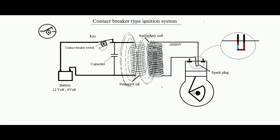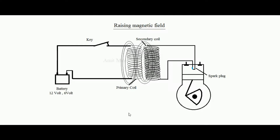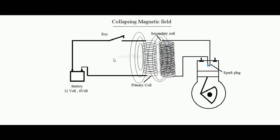The rotation of this contact breaker switch is synchronized with the rotation of the crankshaft, so that exactly on time the primary circuit is either opened or closed for spark development. For both cases — closing or opening the switch — a spark is developed.